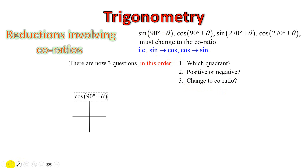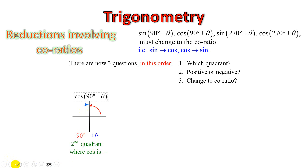If we look at cos of 90 plus theta: that's 90, and the plus theta takes us into quadrant 2. In quadrant 2, we know that cos is negative, so we change it to negative. And the co-ratio of cos is sine. So cos of 90 plus theta will change to minus sine theta.